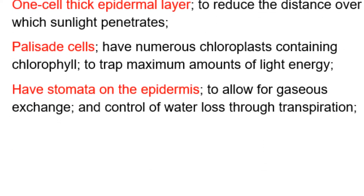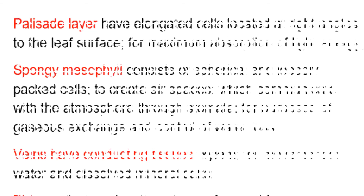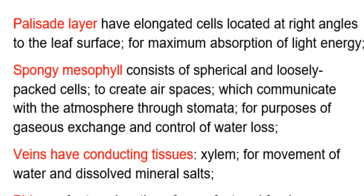The spongy mesophyll consists of spherical and loosely packed cells to create air spaces which communicate with the atmosphere through stomata, for purposes of gaseous exchange and control of water loss.